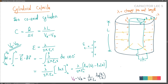Substituting into the capacitance formula C = Q/(VA - VB) = λL / [λ/(2πε₀) · ln(b/a)], lambda cancels out. The final result is: C = 2πε₀L / ln(b/a). This is the capacitance formula for a cylindrical shell design. This is a very important formula.